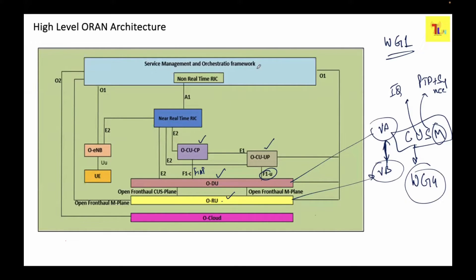Moving to the upper fronthaul — there is the Service Management and Orchestration framework, called SMO. It includes RICs — Radio Intelligent Controllers — which include the Non-Real-Time RIC and the Near-Real-Time RIC. The Near-Real-Time RIC is connected to the SMO via the A1 interface.